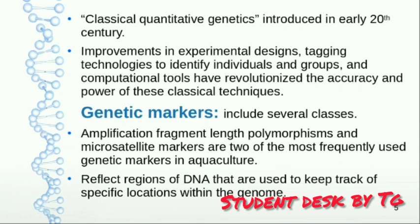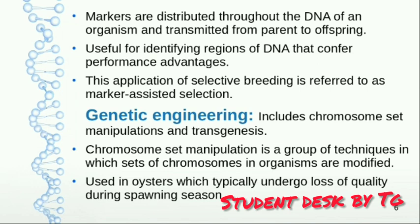With genetic markers, we reflect and identify specific DNA regions and genes of interest. We track the specific location within the genome — the sequence. Markers are distributed throughout the DNA and are transmitted from parents to offspring, so we can easily identify DNA regions in the next generation and identify how a gene performs. This application of selective breeding with markers is called marker-assisted selection.